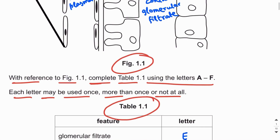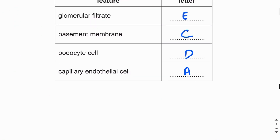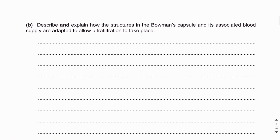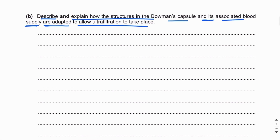The next part asks us to describe and explain how the structures in the Bowman's capsule and its associated blood supply are adapted to allow ultrafiltration to take place — including podocytes, the afferent arteriole, the efferent arteriole, the glomerulus, and the basement membrane.